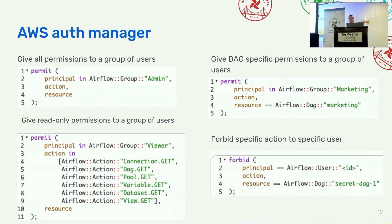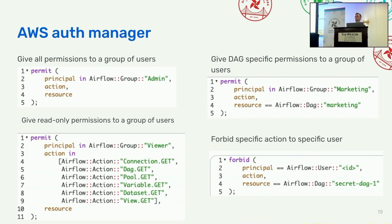So far we've only used 'permit' on the first line to define these policies. But you can also define policies that work the other way around. Instead of granting access, here we define a policy that forbids access. We say if the principal is this specific user, that user won't be able to do any actions on a specific resource — a hypothetical secret DAG. Even if this user belongs to the group admin and has all permissions, this forbid policy means they won't be able to do any action on that secret DAG.